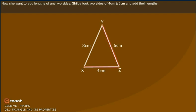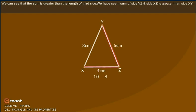Shilpa took two sides of 4 cm and 6 cm and added their lengths. We can see that the sum is greater than the length of the third side. The sum of side YZ and side XZ is greater than side XY.